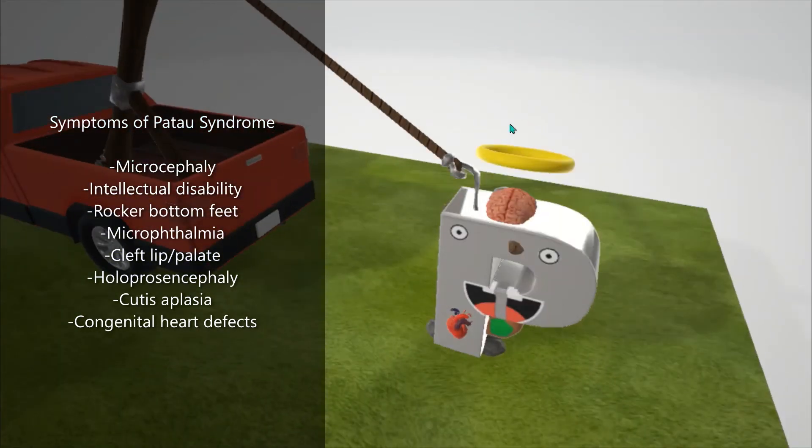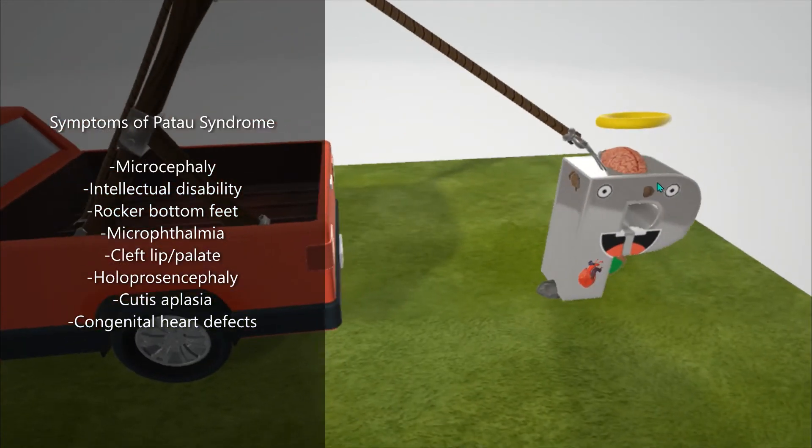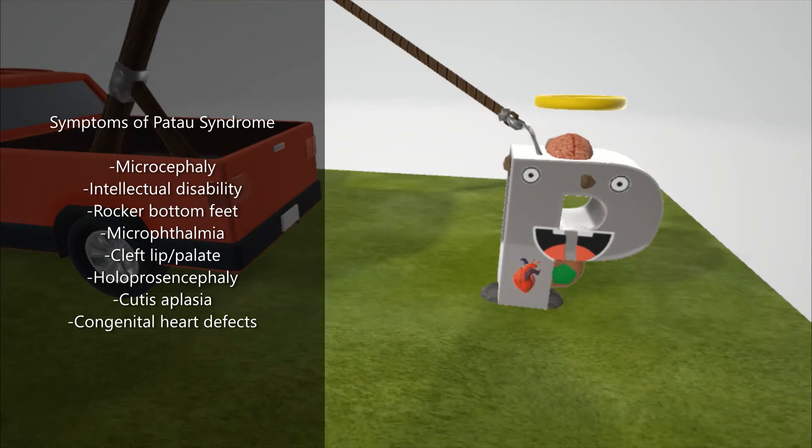He also has a halo on top of his head to help us remember the holoprosencephaly. There's a bone sticking out the side of his head and forehead to help us remember the cutis aplasia, in which the patient's skin is not present and thus the bone might be showing.